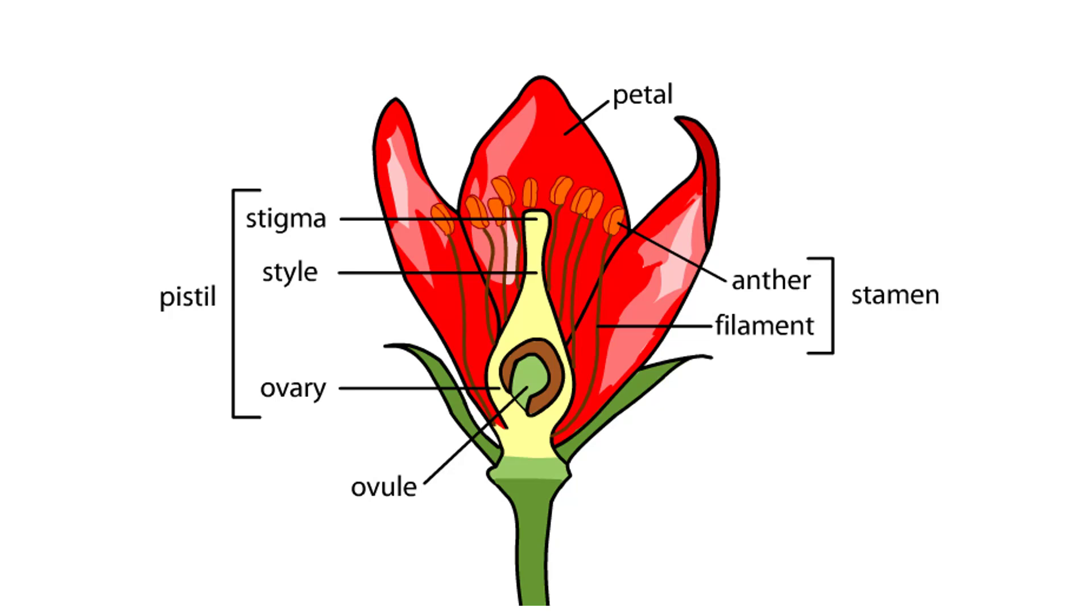Flowering plants undergo an unusual reproductive process in which there are two fertilization events rather than just one. This double fertilization takes place between cells produced in the male reproductive organs, the anthers, and the female reproductive organ, the ovule.